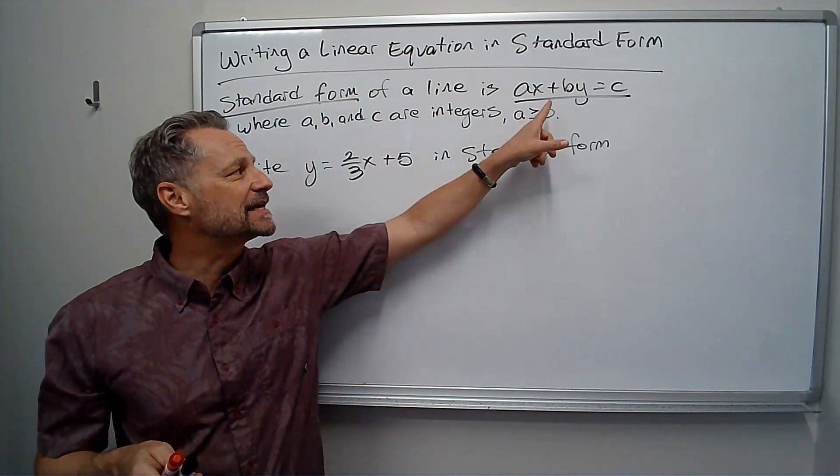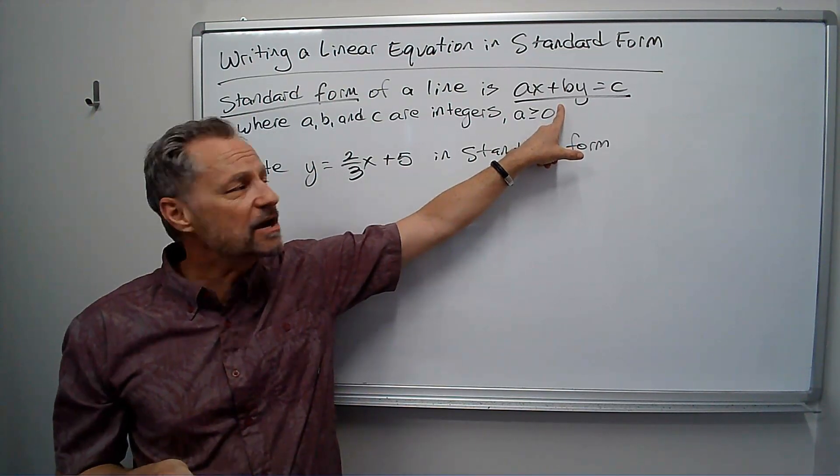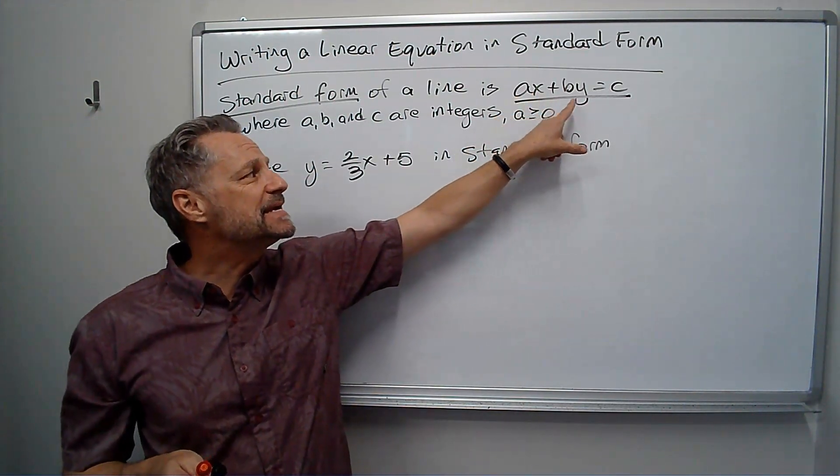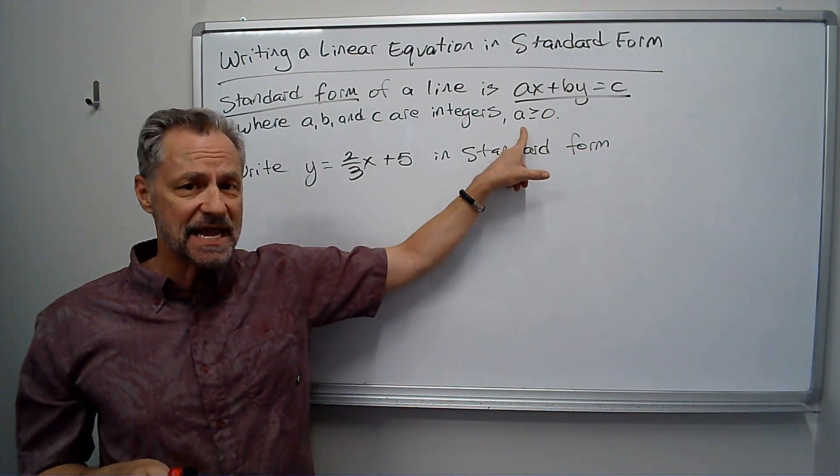Okay, standard form of a line is the form AX plus BY equals C. And what we have to be careful about is that A, B, and C can't have any fractions, they all have to be integers, and A can't be negative.